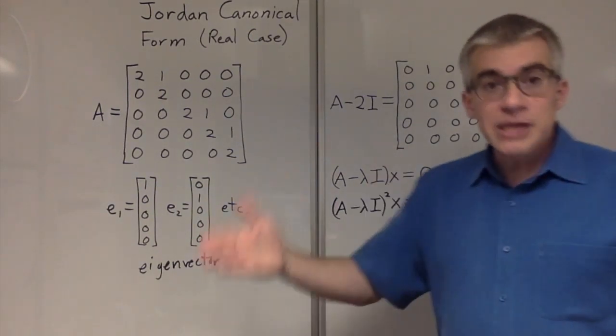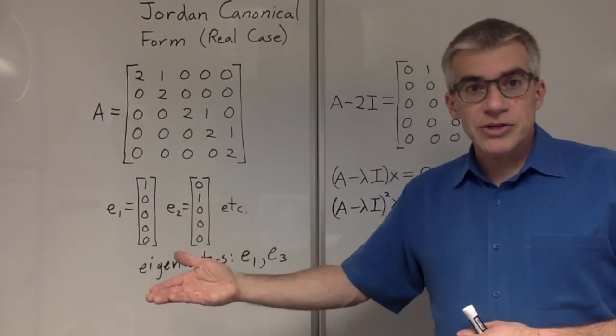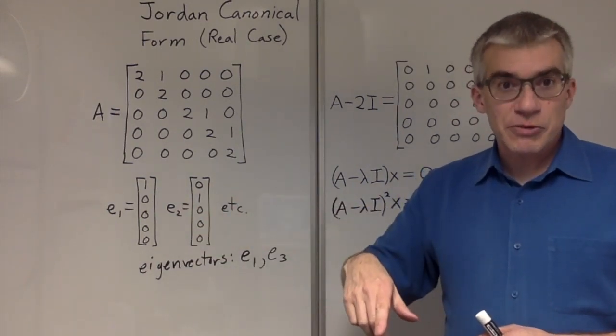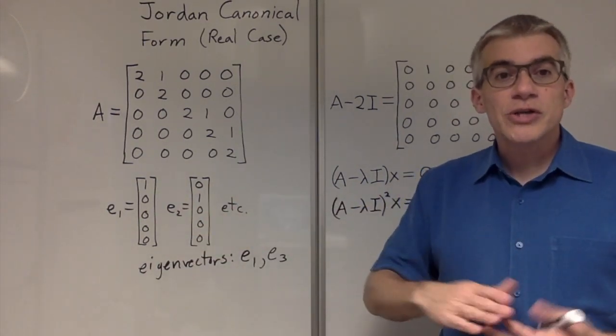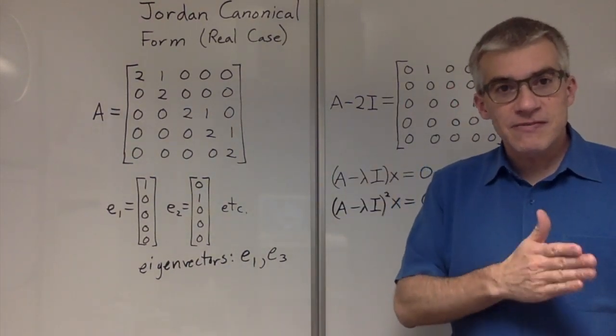And there can be chains of these. You can have another generalized eigenvector that maps onto the first generalized eigenvector. And so on. You have these chains, and they end up on an eigenvector.